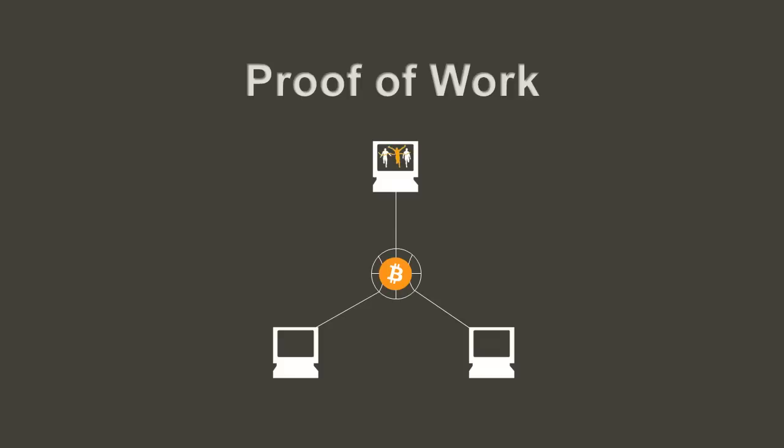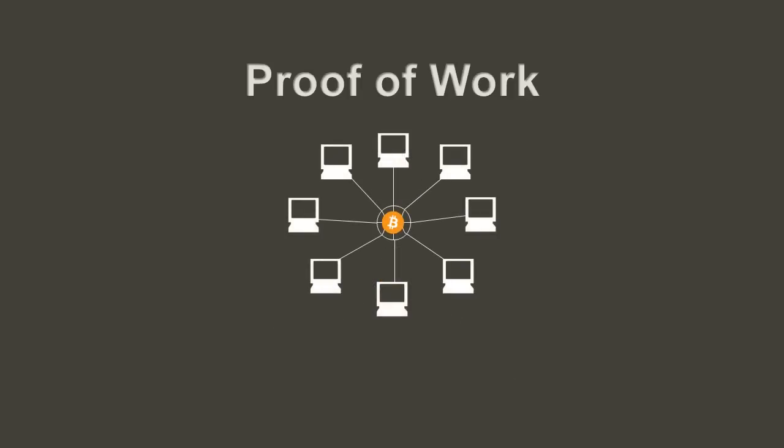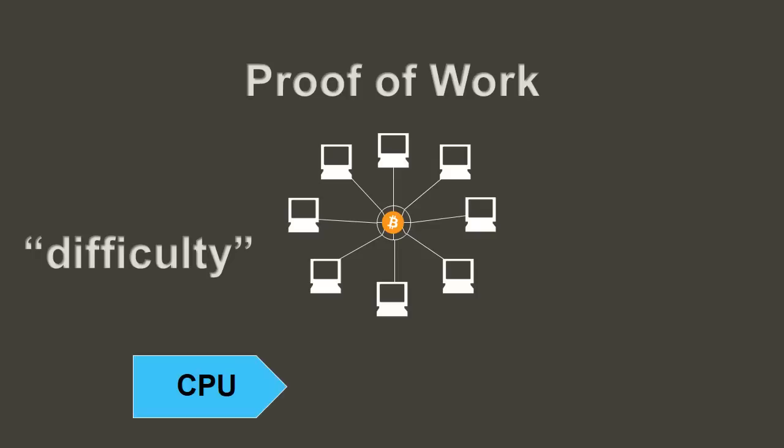When others learn about the network and want to get in on the rewards, they connect. The faster the entire network becomes, be it through more connections or faster machines, the faster the math problem is solved. Without making the problem harder, it would be solved at an ever-increasing pace. To prevent that from happening, the difficulty of a problem is increased to target a set amount of time between when blocks are found.